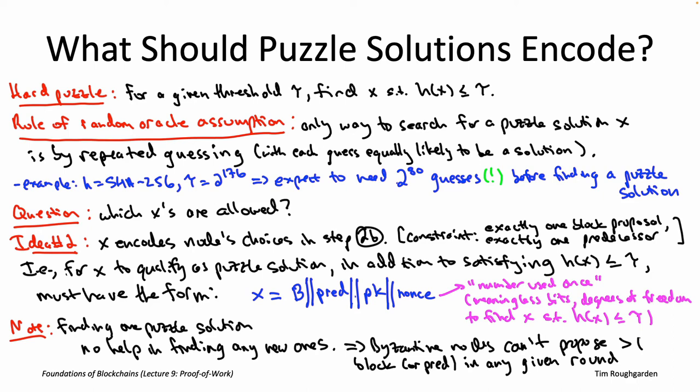You now have a strong conceptual understanding of exactly how proof of work actually works. In the next video — the third video of lecture nine — we'll talk about the properties of proof of work. We'll prove its Sybil resistance property, and then connect that property back to the discussion of a permissionless magenta box that we need to get the finality and liveness guarantees proved in lecture eight.